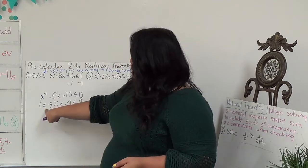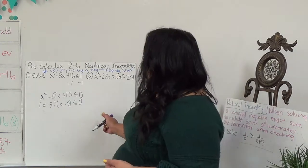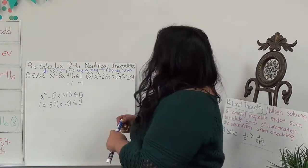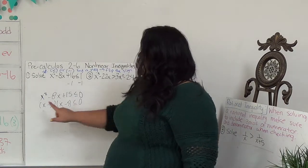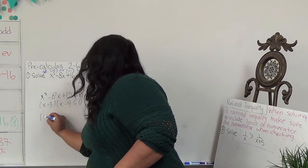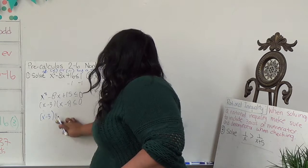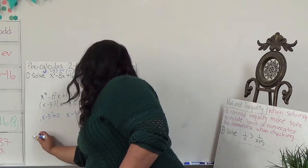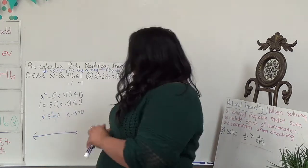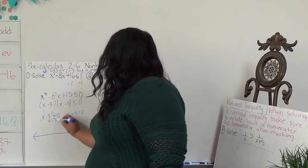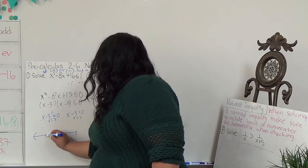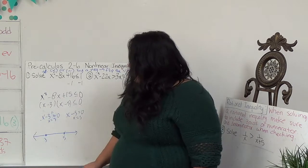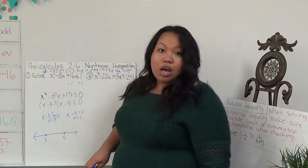Now I have to figure out when these are less than 0 — so basically when they're negative. This is the other part of inequalities we have to deal with. If this was an equal sign, I'd just set each to 0. But I'm going to make it into an equal sign to find markers. I'll do x minus 3 equals 0 and x minus 5 equals 0, giving me x equals 3 and x equals 5.